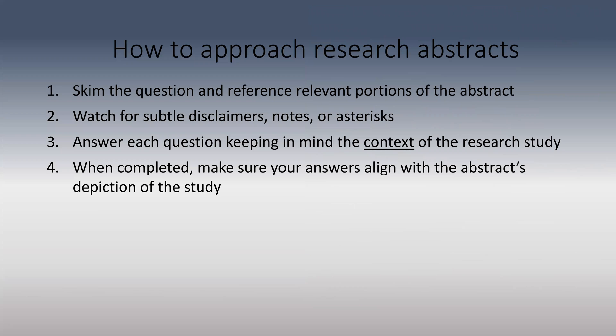Let's talk about how to approach abstract questions, then cover the content itself, and summarize with high yield points. First, always skim the question and reference relevant portions of the abstract. For example, if the question asks about blinding status, go directly to the methods section. Reading the question first before the abstract saves valuable time, since abstract questions tend to take much longer than normal questions.